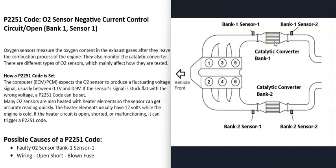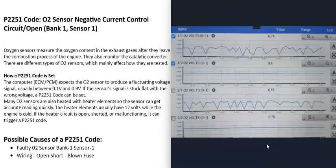There are usually two O2 sensors per bank — sometimes three. Sensor one is located before the catalytic converter and is also called the upstream O2 sensor. Sensor two is located after the catalytic converter and is called the downstream O2 sensor. When you get this P2251 code, the sensor to locate and check is the bank one sensor one O2 sensor.